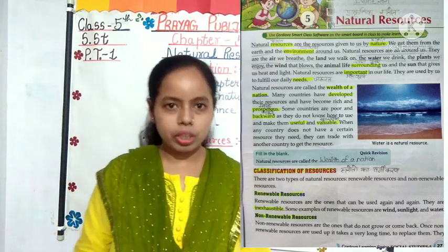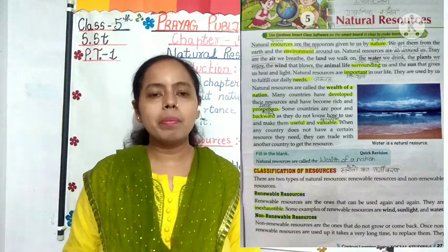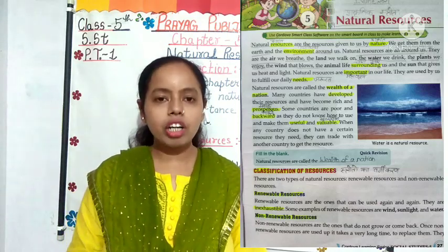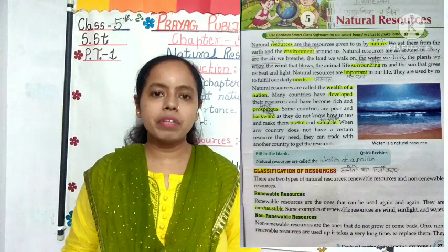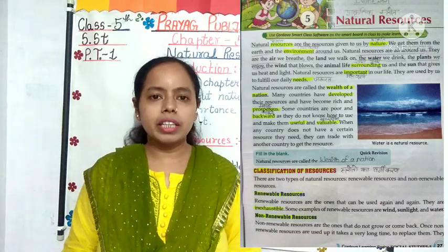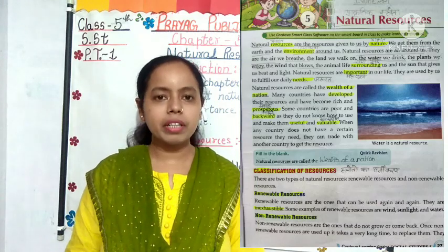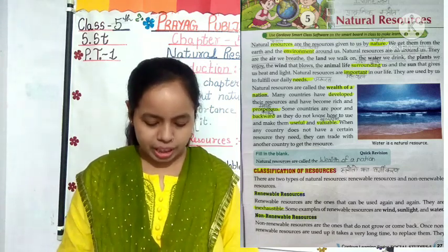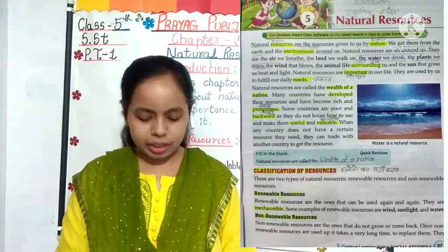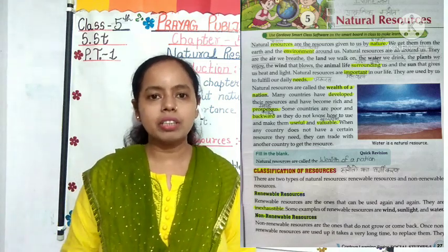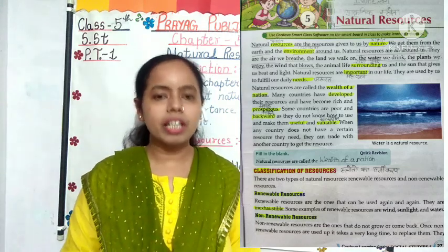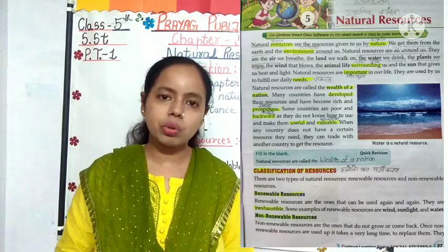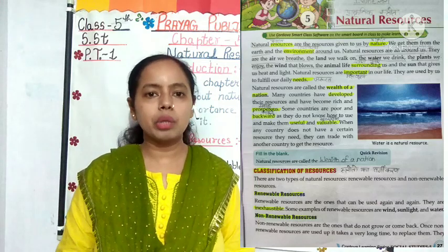Students, natural resources that are all around us include: Air, which we use to breathe; Land, on which we walk and do agriculture; Water, which we drink and use for our daily life work; Plants, which give us a feeling of enjoyment; Wind, which we feel as it blows and makes us feel good; and Animal life surrounding us. Most importantly, the Sun, which gives us heat and light. So all these are natural resources — they are not human-made, they are given to us by nature.